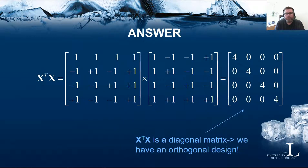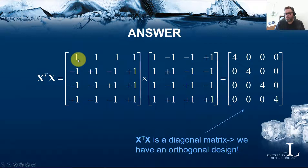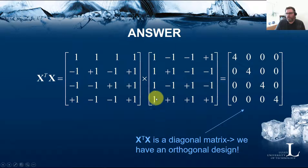If we calculate X transpose X, we get a matrix with only the value four on the diagonal. This is a diagonal matrix, and thereby we have shown that the matrix X — our original design matrix completed by the column with only ones — when transposed and multiplied together gives a diagonal matrix.